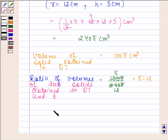Hence, our required answers are 240π cm³ and 5 is to 12. So this completes the session. Bye and take care.